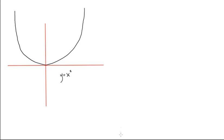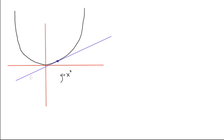So now, say we have a point — it doesn't matter what point, we could have any point. If we want to find the derivative at some point, let's pick this point right here. That's the tangent to the curve at that point, and it looks something like this. If we can find the derivative of the function here, we can find out what the slope is, what the tangent is.